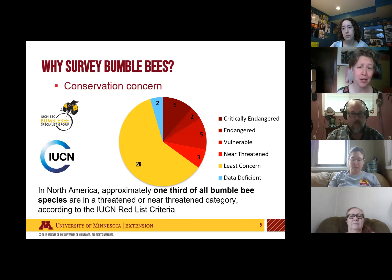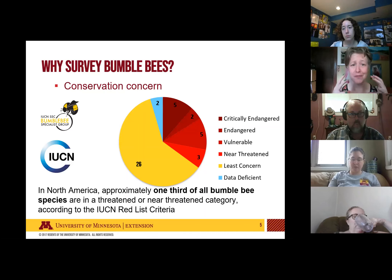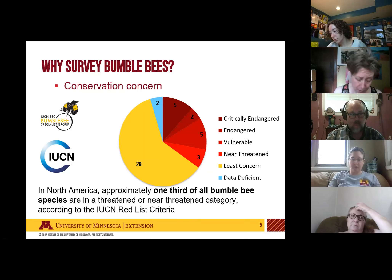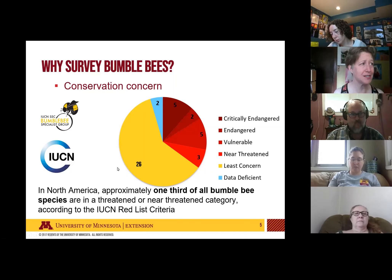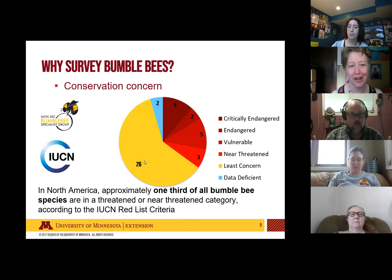From information gathered globally, the news isn't great — one out of three bumblebee species are threatened or near threatened, meaning populations are shrinking in range and abundance. As a whole, bumblebees are considered a conservation concern, even though some of the 26 North American species seem to be doing okay. We still want to keep track of all of them so we have information on their populations now to understand what's happening in the future.